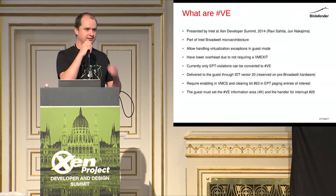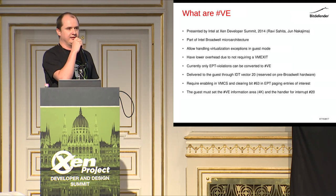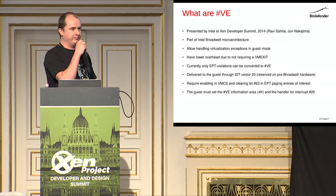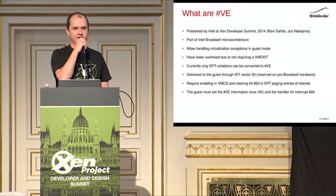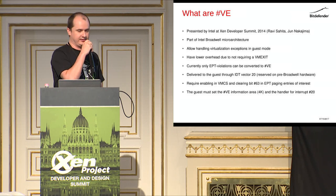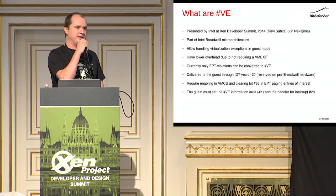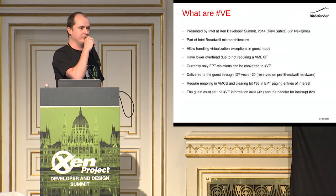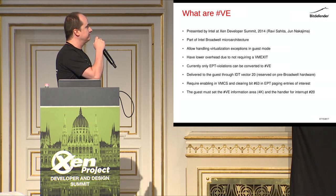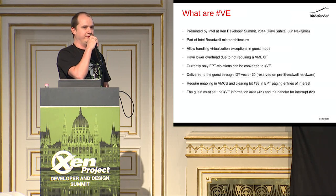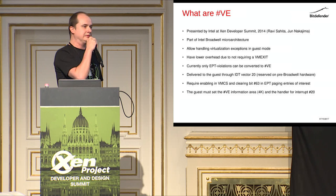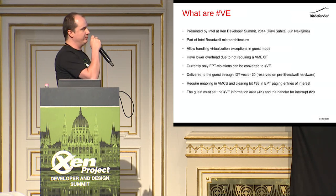The thing with virtualized exceptions is that they allow converting exceptions that normally trigger VM exits into simple guest interrupts. Given the ability to handle these exceptions in the context of a guest, it avoids a VM exit, which is pretty costly and has quite some overhead. Currently, only EPT violations can be converted to virtualized exceptions. These exceptions use the previously unused vector 20. They require enabling specifically in VMCS, and clearing a VE bit in every EPT paging structure of interest. Then the guest sets an information area where the processor puts details about the exception, and implements the handler.